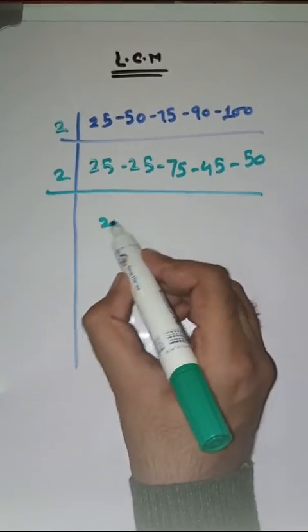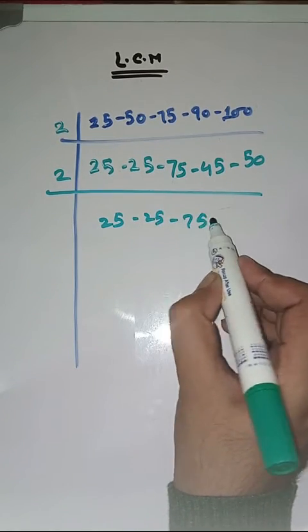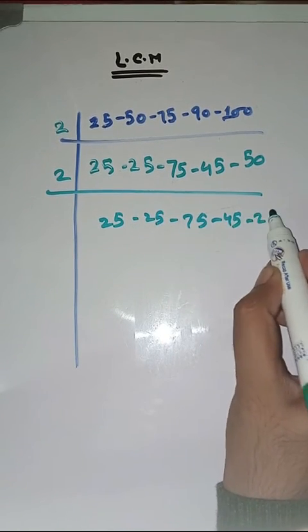Again with 2. 25 as it is, 25 as it is, 75 as it is, 45 as it is, 2 25's are 50.